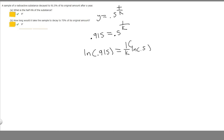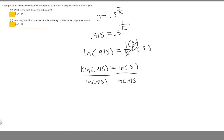We're trying to solve for k, so if we multiply both sides by k, we get k times the ln of 0.915 is equal to the ln of 0.5. Now we divide by the ln of 0.915 to get k by itself. So k is equal to the ln of 0.5 divided by the ln of 0.915. Plugging that into the calculator gives 7.802968, which rounds to 7.80.